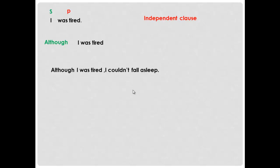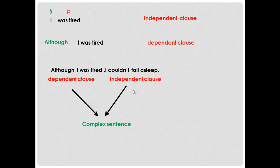There's something missing in the meaning — I don't have a complete idea. 'Although I was tired, I couldn't fall asleep.' Now I have a complete meaning and a complete idea. Together I have a dependent clause and an independent clause, and they form a complex sentence.